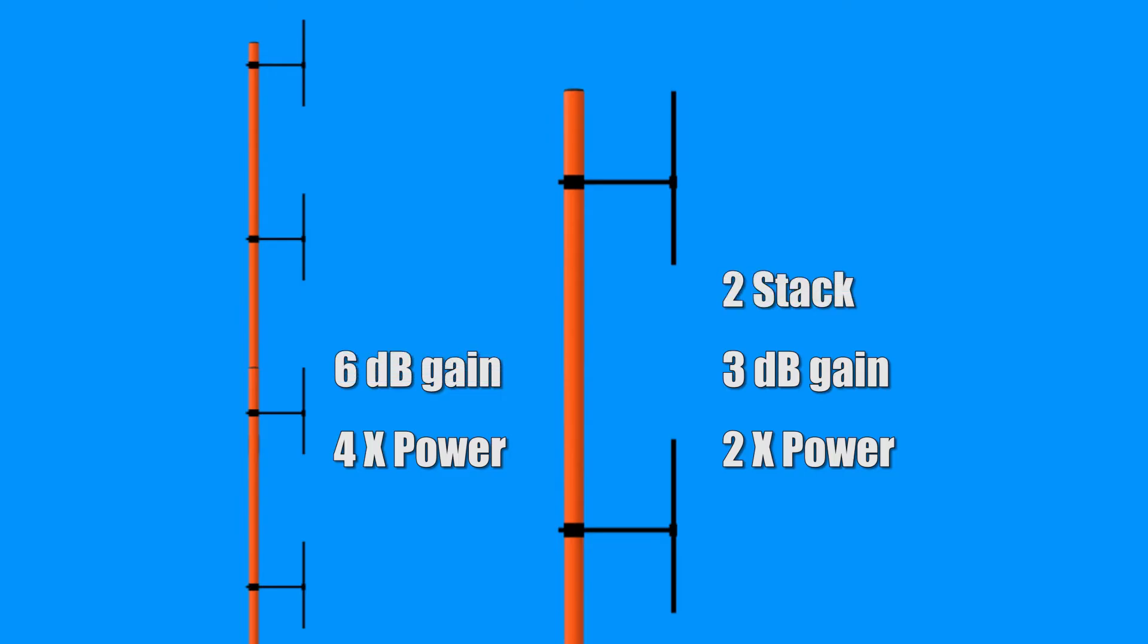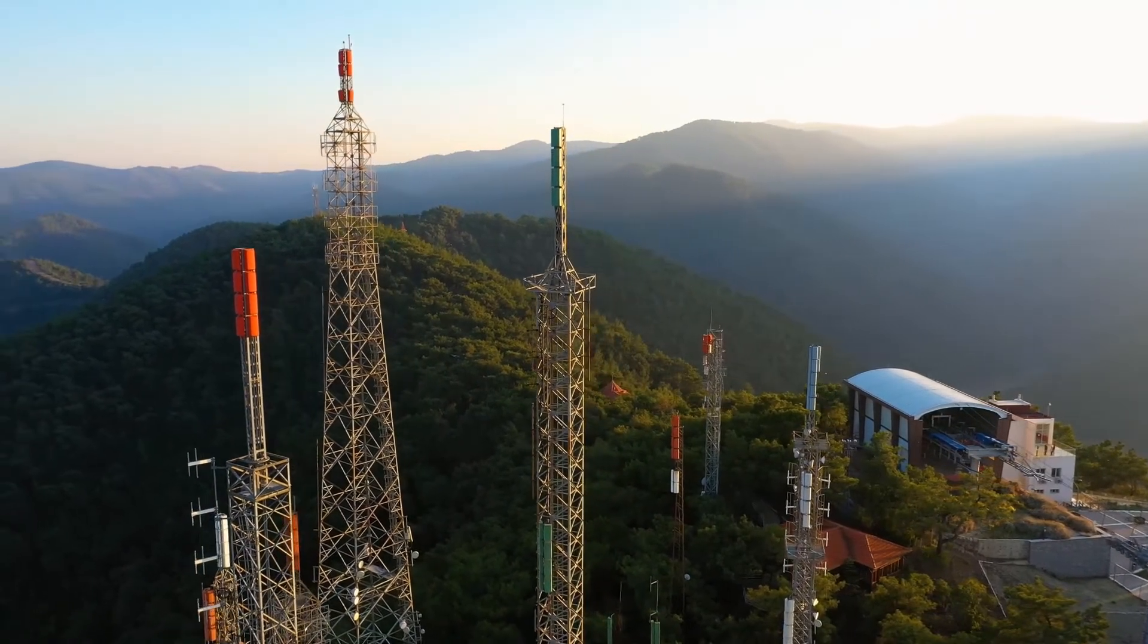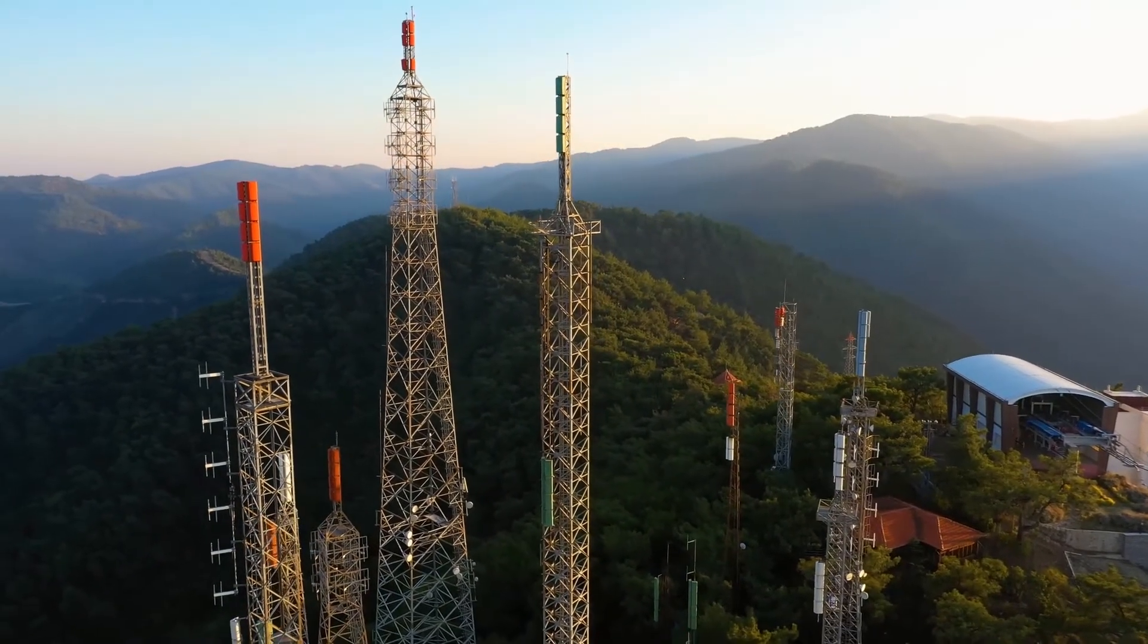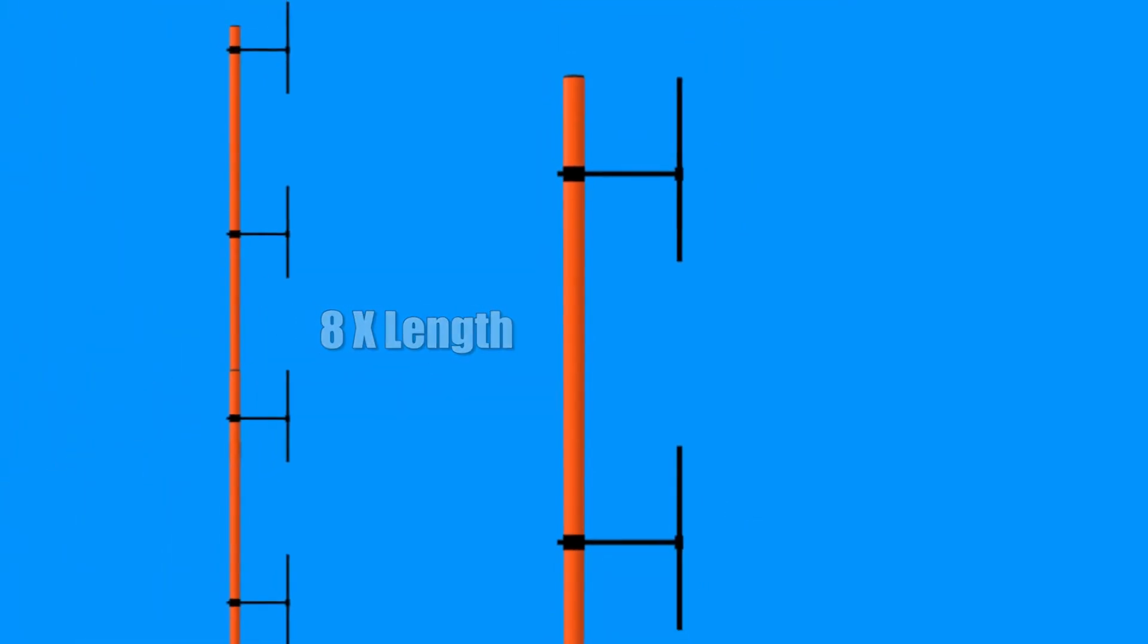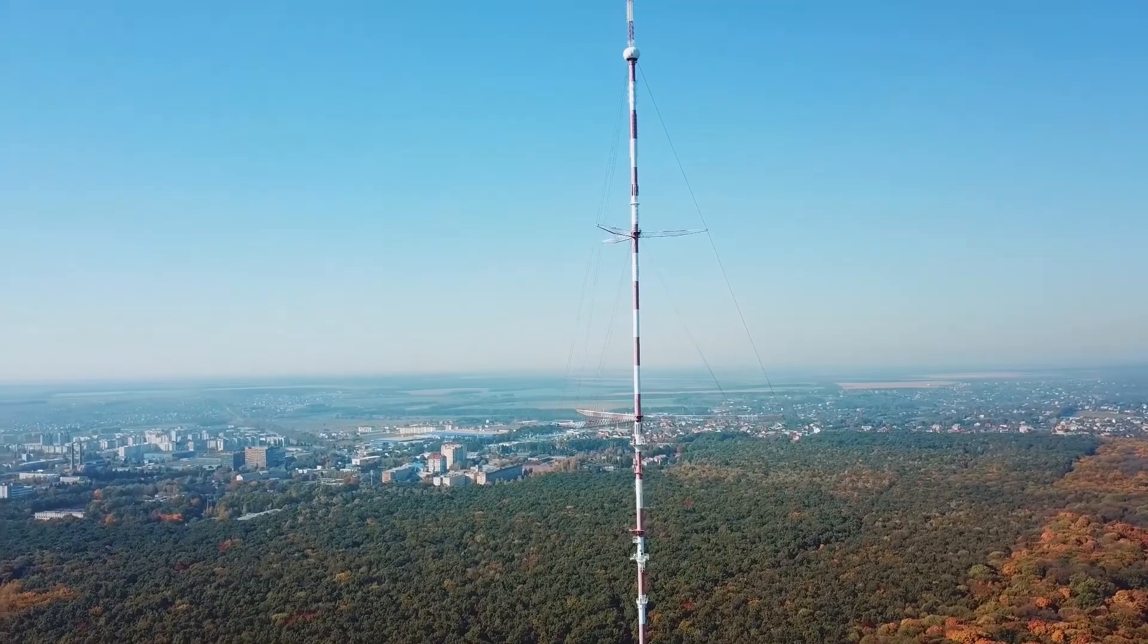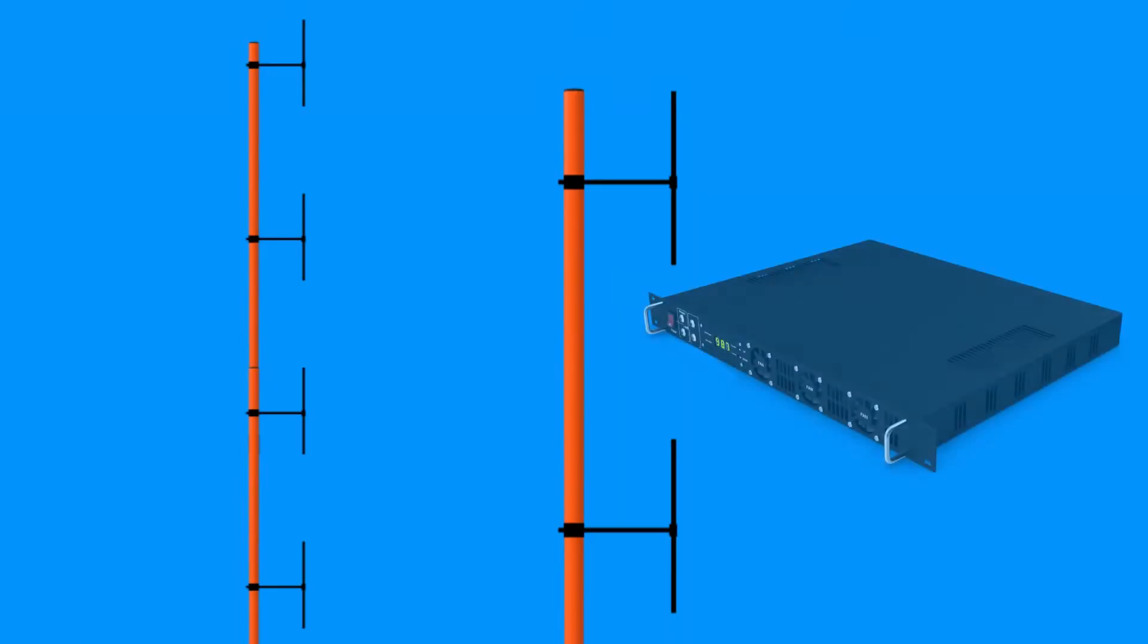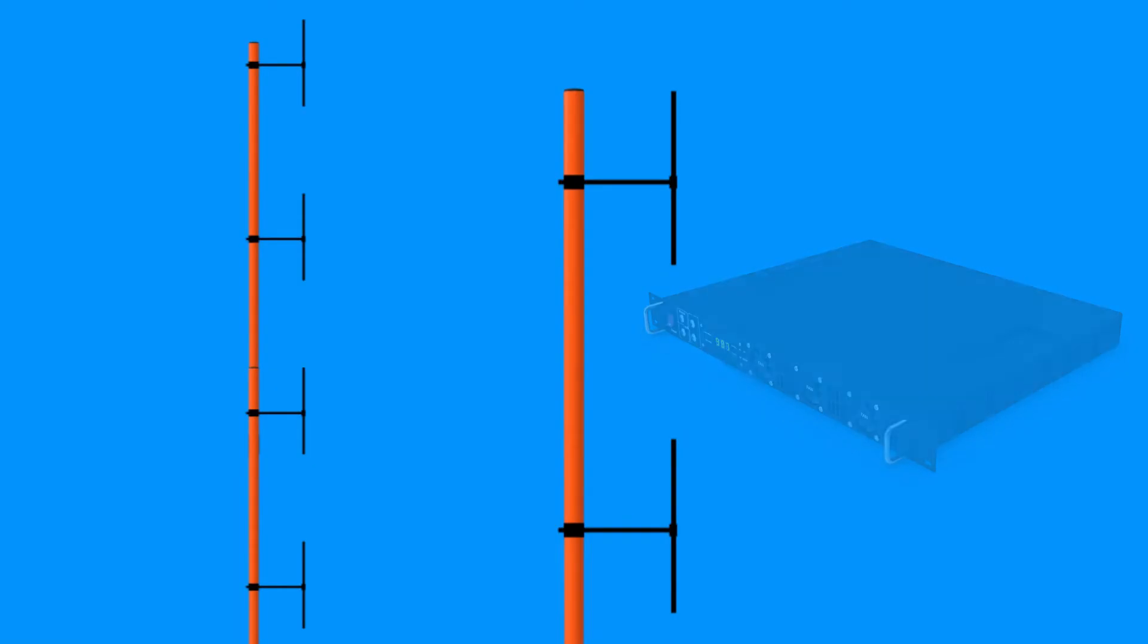This is by using a 2-stack and a 4-stack. In theory, it is possible to build even bigger stacks, such as an 8-stack, but it actually becomes impractical beyond 4 antennas because of the sheer size of the antenna stack. A 4-stack antenna is at least 8 times the size of a single antenna length. Unless you have a massive antenna mast that is completely vertical, this is not the way to go. You would be better off buying a transmitter that is more powerful. Let's look now at building a simple 2-stack antenna array.